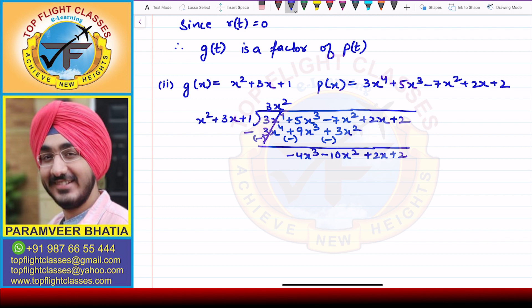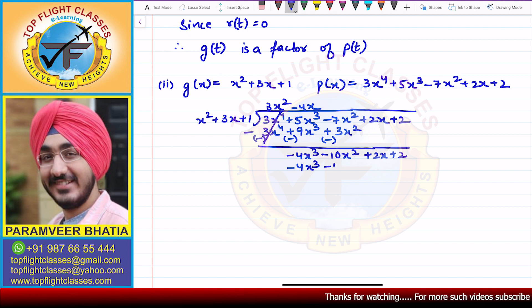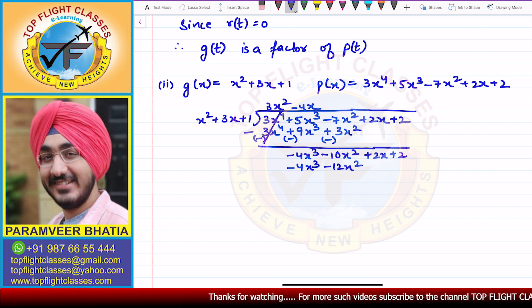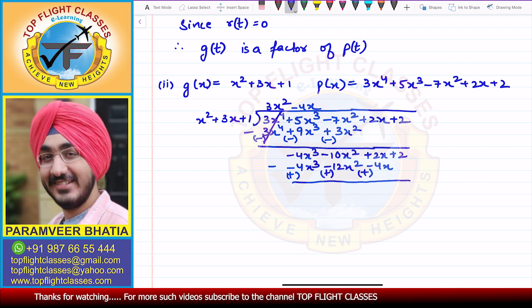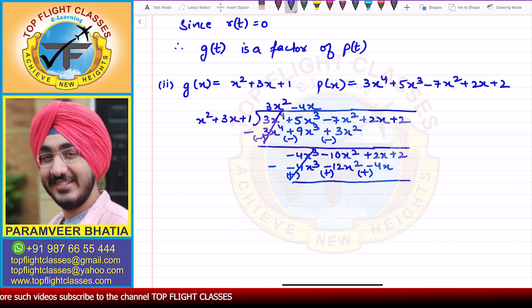Now to eliminate −4x³, I multiply by −4x: this gives −4x³ − 12x² − 4x. When I subtract, the signs change: −4x³ + 4x³ cancels, −10x² + 12x² = +2x², and 2x + 4x = +6x. Then +2 comes down as is, giving: 2x² + 6x + 2.